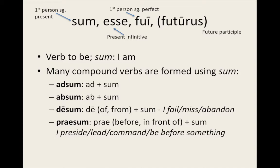Introducing the verb 'sum', meaning 'I am'. Here are its four principal parts: sum, esse, fui, futurus. Notice that its fourth principal part, 'futurus', is a future active participle rather than a past participle as we're used to seeing in the fourth principal parts. 'Futurus' means 'going to be' or 'about to be'.